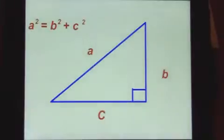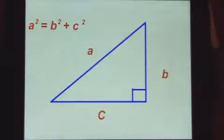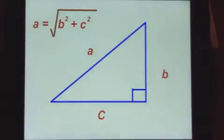Using Pythagoras' theorem, we're able to find a missing side of a right-angled triangle as long as we know the other two sides. It can be written like this, or alternatively, like this.